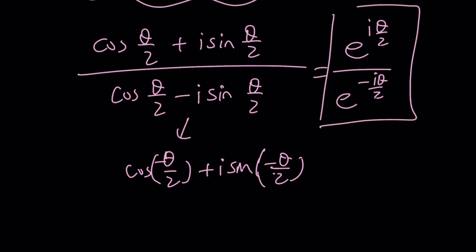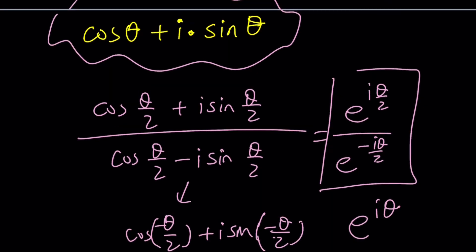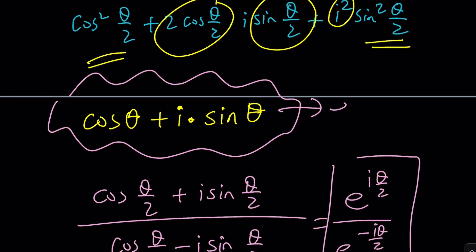You can subtract the exponents. That's going to give you e to the power i theta, which is the answer. And that is equivalent to this, isn't it? Remember Euler's formula? That's what we get by using Euler's formula. That's why Euler's formula is really awesome. You can basically write a complex number in the most compact form.